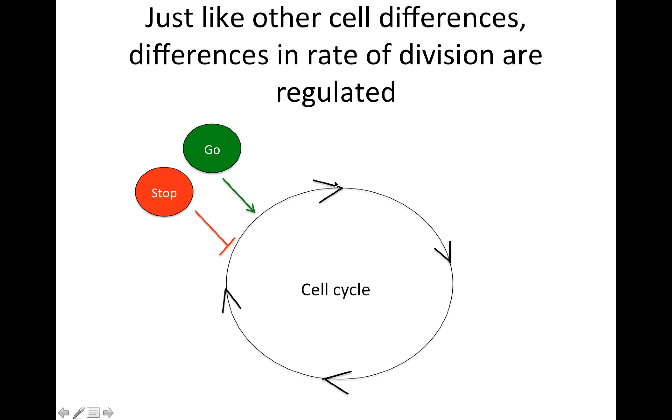So if this is the cell cycle, then that means we have proteins encoded by genes that are either saying go, like continue through the cell cycle, continue to divide, or stop. Arrest, don't divide, don't go through mitosis.